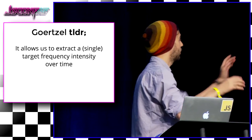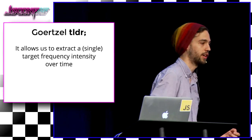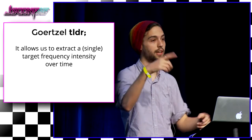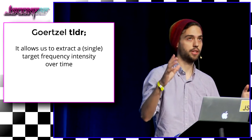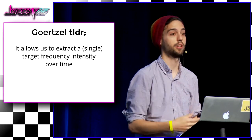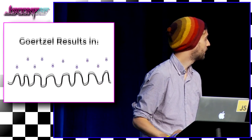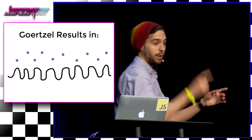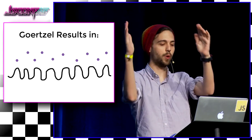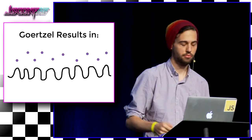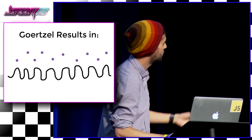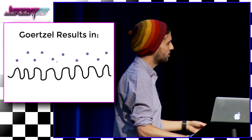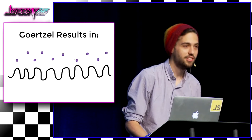The Goertzel algorithm allows us to extract a single target frequency intensity over time. We have our bins, we know they relate to a bit — if the frequency is high, it's a one, if it's low, it's a zero. We look for the occurrence of our high frequency, and if it's not there, we assume it's a zero. Looking at the Goertzel results: we have our waveform, we run over chunks of the wave and get these intensity values — low or high. From there you can say this is a zero, this is a one, but then there's this weird bleed-through where you're not sure if it's a zero or a one. It's still not working perfectly.